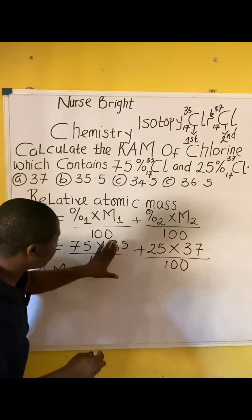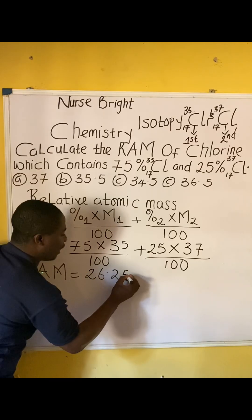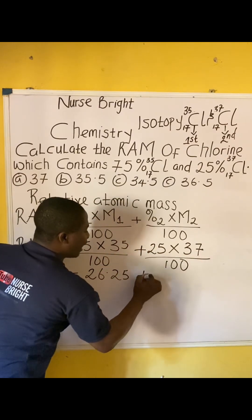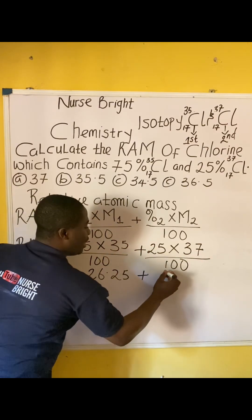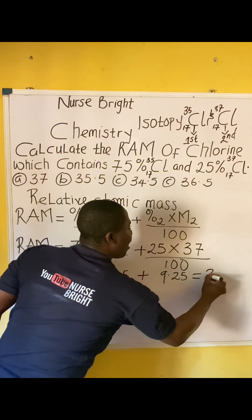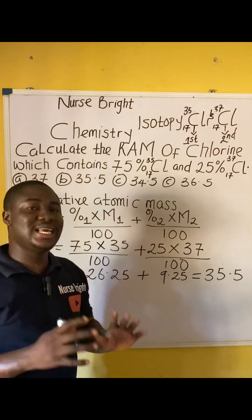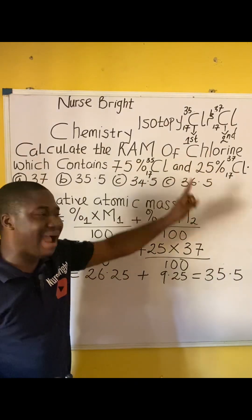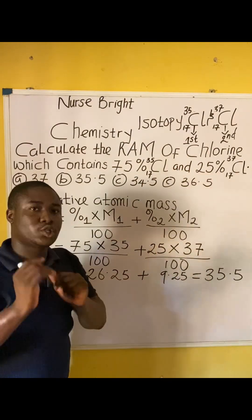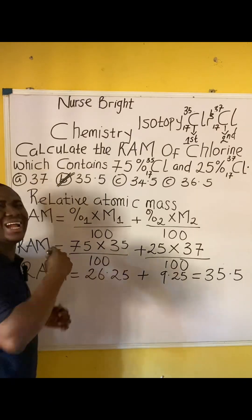When we calculate 75 × 35 / 100 we get 26.25, and when we calculate 25 × 37 / 100 we get 9.25. Adding them together we get 35.5. So the relative atomic mass of this chlorine isotope is 35.5, which means the answer is option B.